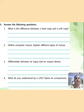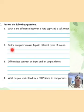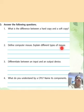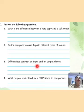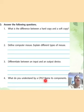Now question answers. First: what is the difference between a hard copy and a soft copy? Second: define computer mouse and explain different types of mouse. Third: differentiate between an input and an output device. Fourth: what do you understand by a CPU? Name its components.